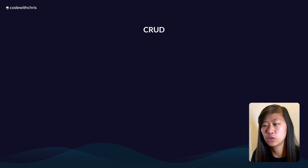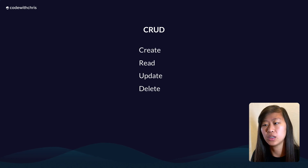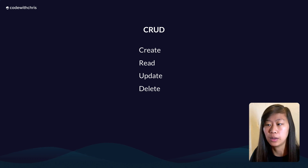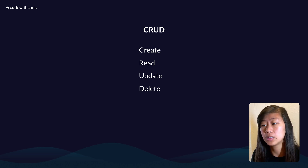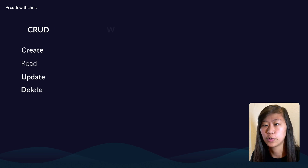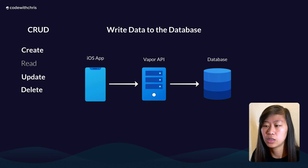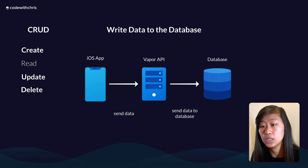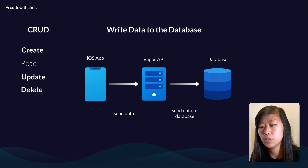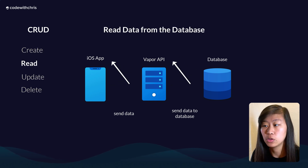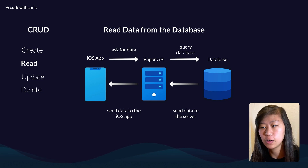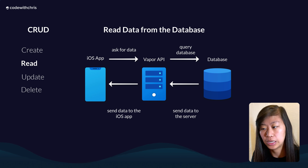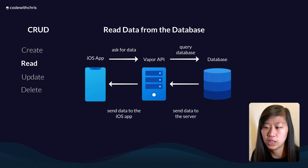The four database operations are create, read, update, and delete. Create is adding new data to the database. Read is reading the data from the database. Update is updating data that's already in the database, and delete is deleting it. For create, data is created on the iOS app, sent to the Vapor API server, which then saves it to the database. For update and delete, the operation comes from the iOS app, tells the API to do something, and the API does that to the database. For read, the iOS app asks for data, it goes to the API, which tells the database what data is needed, and the database returns it back through the server to the iOS app.